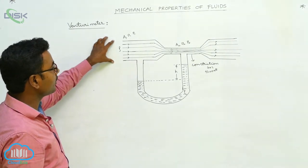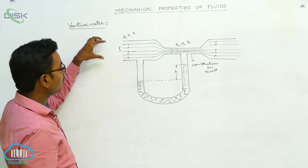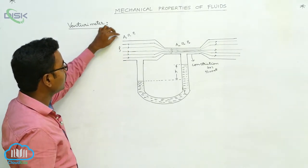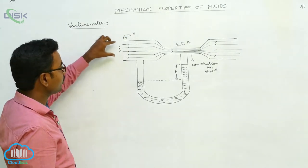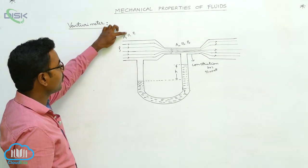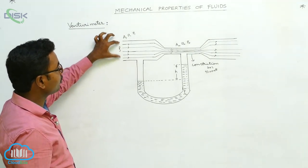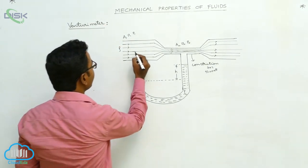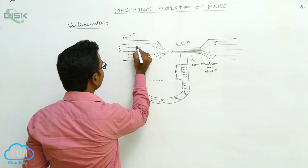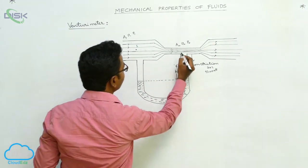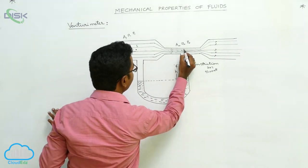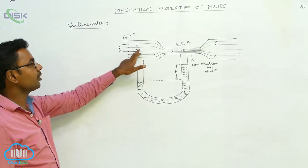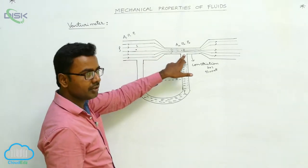Suppose the fluid is flowing with velocity V1 through this tube. The area of the tube at point 1 is A1, and the pressure at point 1 is P1. At point 2, which is in the constriction, the pressure is P2.